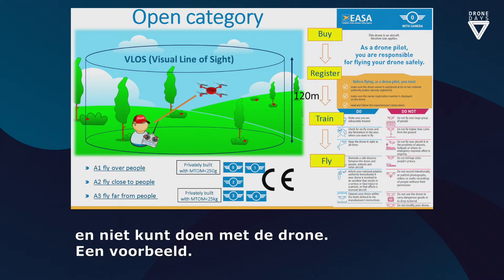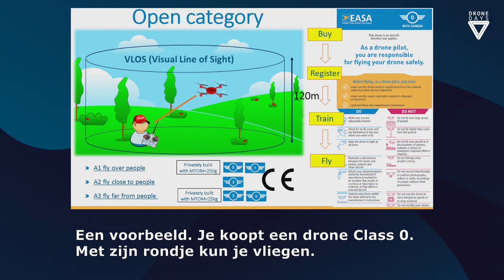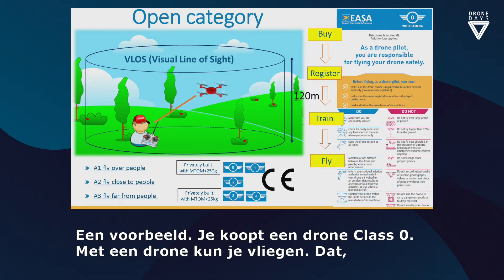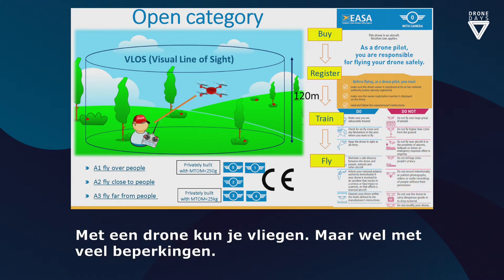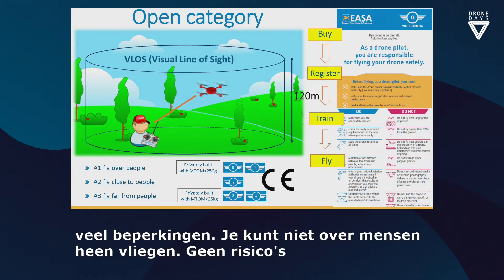If you buy a drone that is class C0 — meaning it has a weight below 250 grams — or class C1 with a weight below 900 grams, you have a very small number of limitations. You need to avoid flying over crowds and avoid steadily flying over people, both to avoid posing a risk to them and to protect their privacy. Other than this, you can fly in an urban environment.